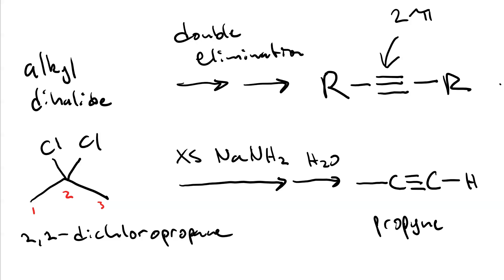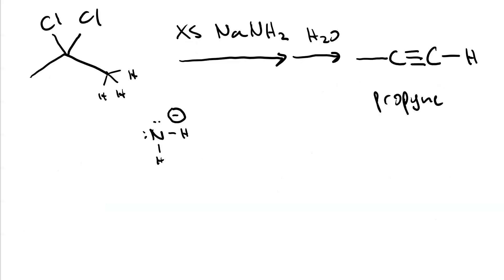Next we'll look at the mechanism. In the first step, an amide ion takes one of the beta protons. That sigma bond becomes a pi bond, and the leaving group leaves, giving us 2-chloropropene.